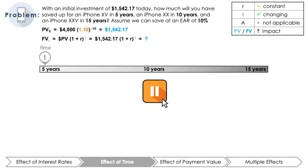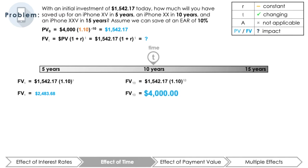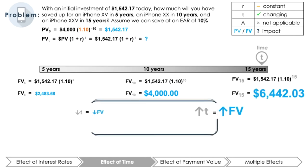When investing the initial $1,542.17 at an effective annual rate of 10%, the FV 5 years from now is $2,483.68. In 10 years, it is $4,000. And in 15 years, it is $6,442.03. In simplistic terms, this example highlights exactly what your mom told you ever since you were a kid. By saving your money longer, the more money you will have in the future. On the flip side,